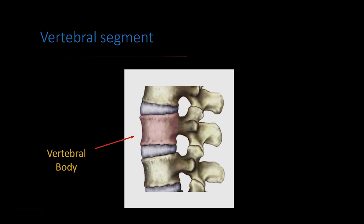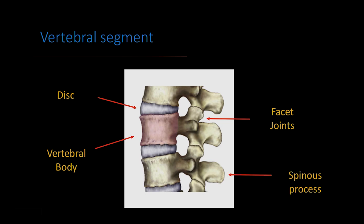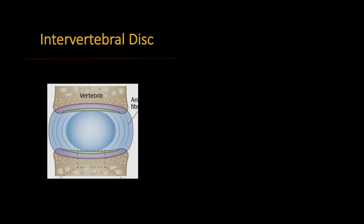Each segment of the spine is made up of different parts. The vertebral body is in pink, the vertebral discs are in between the vertebral bodies, the joints which are called the facet joints — there are two of them at each level. In the back there's a spinous process, which attaches to the lamina, and the holes are where the nerves come out. Looking further at each disc, there are two layers: the outer core called the annulus fibrosis and the inner core called the nucleus pulposus — you can think of it like a jelly-filled donut, where the jelly is the nucleus pulposus and the dough is the annulus fibrosis.